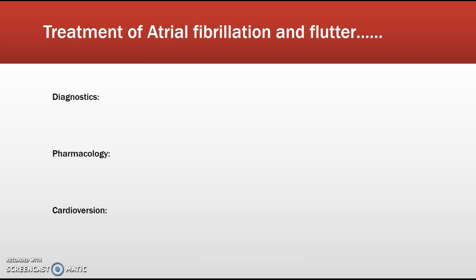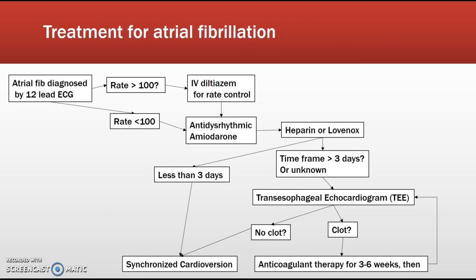Atrial fibrillation may convert back to normal sinus rhythm on its own or with drug therapy. If not, cardioversion is an option. The algorithm describes how treatment of atrial fibrillation is structured — heart rate and the period of time the patient has been in atrial fib are both important. Starting with atrial fib diagnosed by 12-lead EKG: if the rate is fast, the patient may receive IV diltiazem for rate control; if slower, they may start loading on amiodarone. Either way, patients will likely receive amiodarone even alongside IV diltiazem.